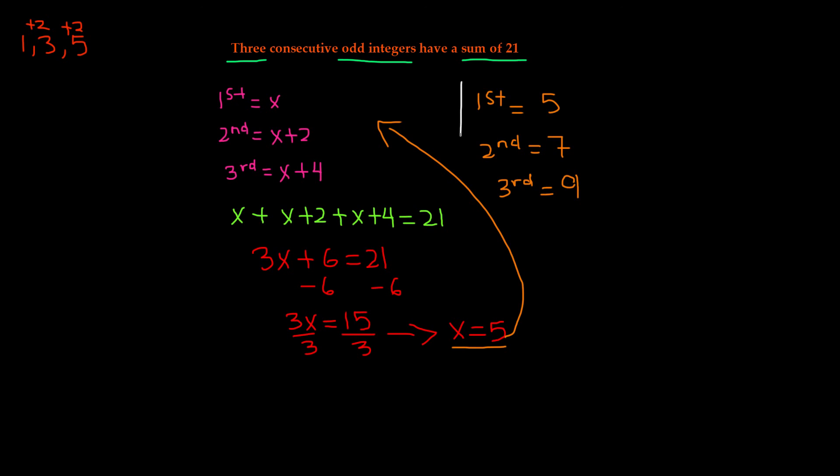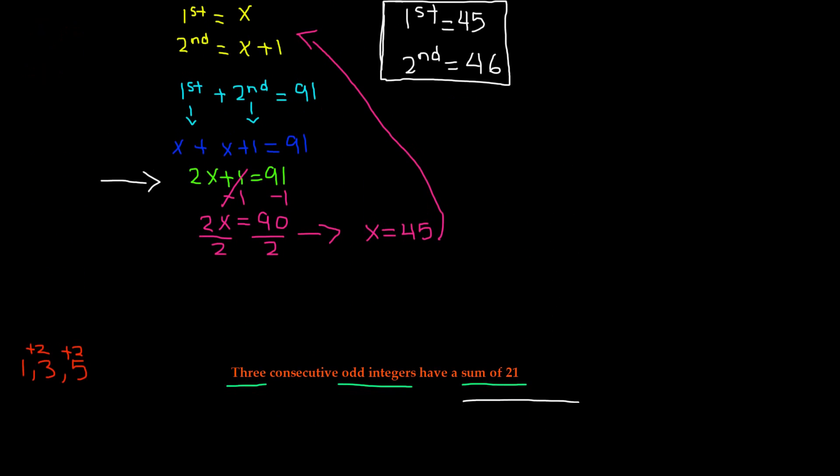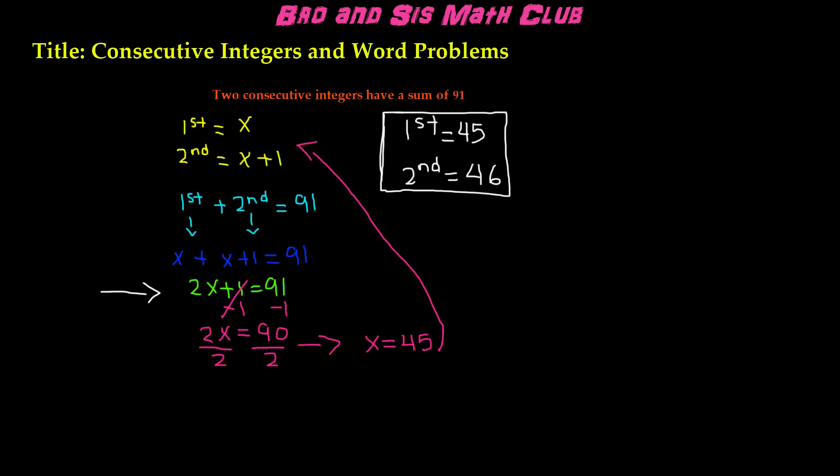Therefore, these are the three odd consecutive integers, 5, 7, and 9, that equal 21. This is it for consecutive integers and word problems. Thanks for watching this video, and we will see you guys next time. Bye!